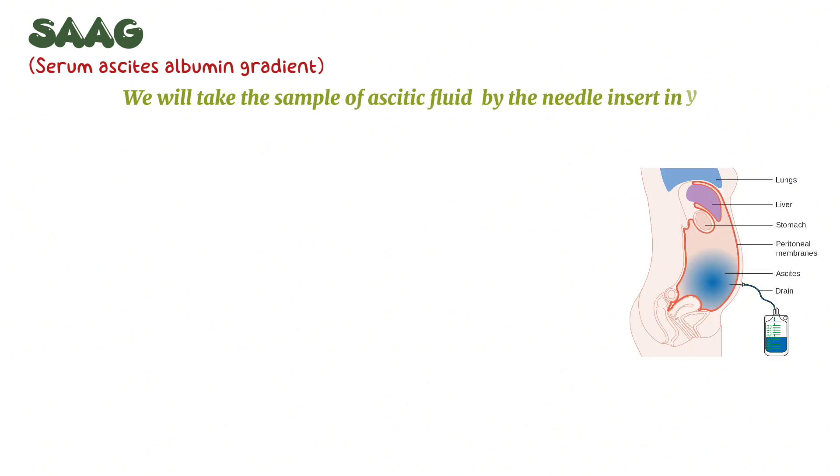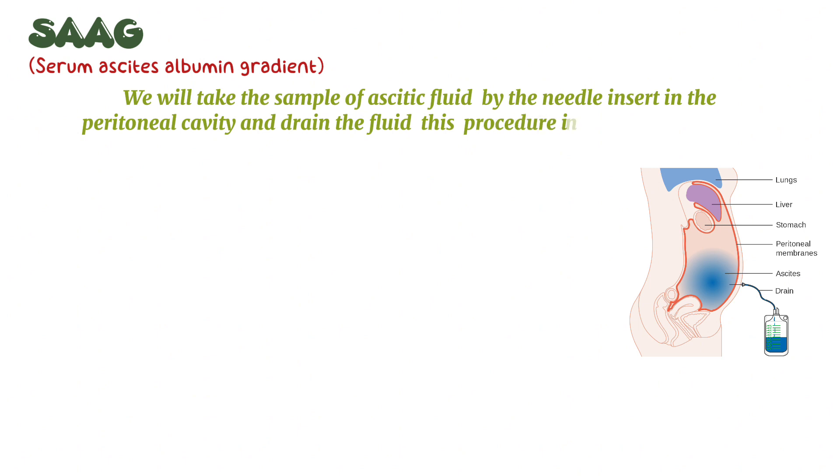First, in this test, we take a sample of ascitic fluid by needle insertion into the peritoneal cavity and drain the fluid. This procedure is called paracentesis.